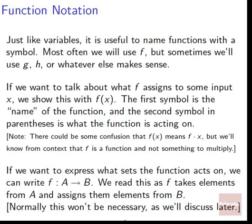If we want to express what sets the function acts on, we can write f colon A arrow B. This means f goes from A to B — it takes elements from A, our first set, and assigns them elements from B. Normally it won't be necessary in this course, and probably for the next couple of years, to name the sets that our function is working on, but we'll discuss that later when we get to it.